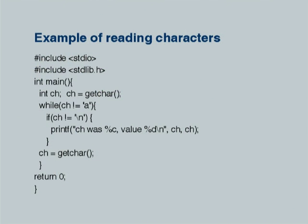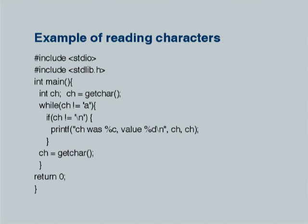Here in the example, there is a loop: while ch is not equal to small 'a', do the following. If ch is not equal to the newline character, print ch — first as %c (the character) and then as %d (its ASCII value). As long as ch is not equal to newline, this printf executes. If ch equals newline, it is ignored. The program keeps reading characters and printing them along with their ASCII values, and the loop breaks when you input the character 'A'.